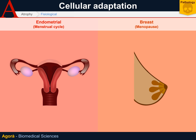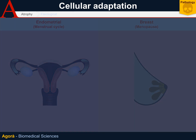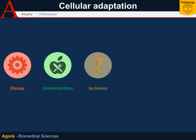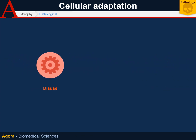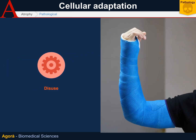Atrophy can be caused by five main factors: disuse, undernutrition, ischemia, compression, and denervation. Disuse atrophy is caused by a reduction in loading on the anatomical structure. The most affected tissue is obviously that of the muscle, since its volume is the first to decrease in case of body immobilization.